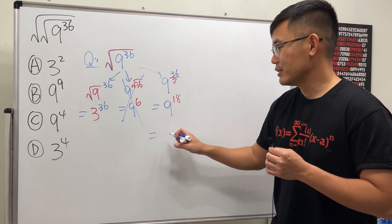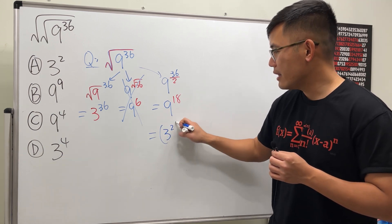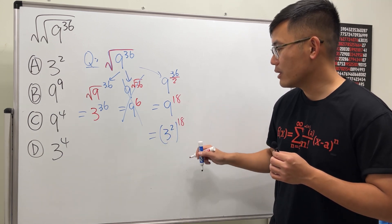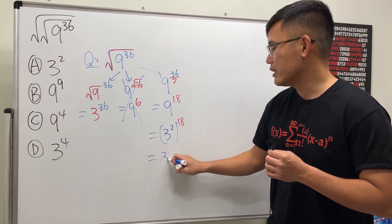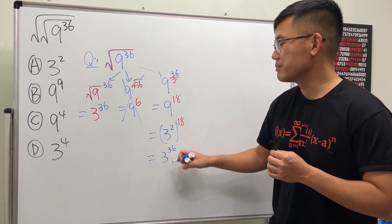9 is the same as 3 squared, and then we keep the 18th power. And you see, power times power, we end up with 3 to the 36th power.